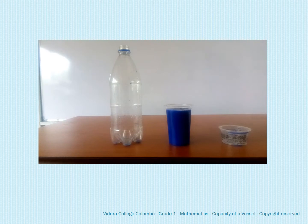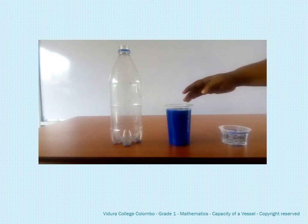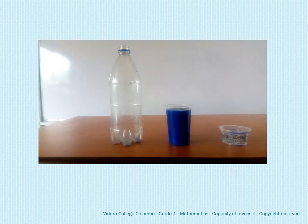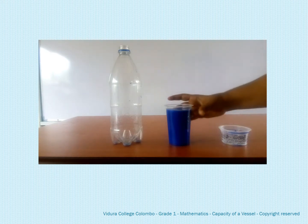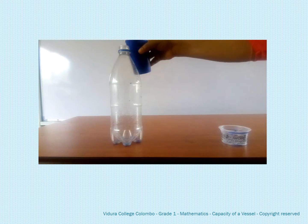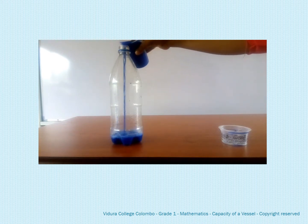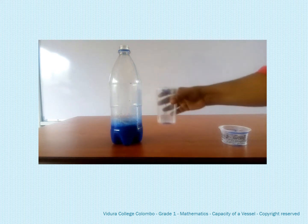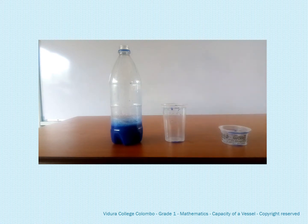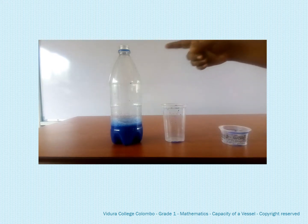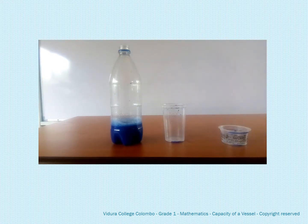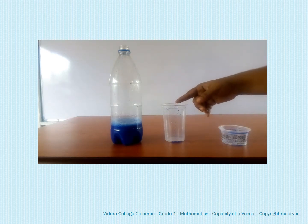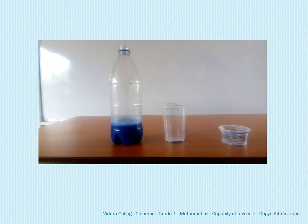Now let's fill the glass with colored water. Look at this — it's filled with colored water. Then pour this water into the empty water bottle. What do you see? It's not full. You need more water to fill the bottle. So the glass has less capacity but the bottle has more capacity.